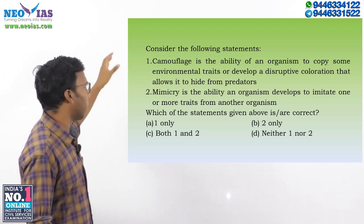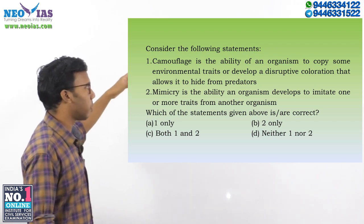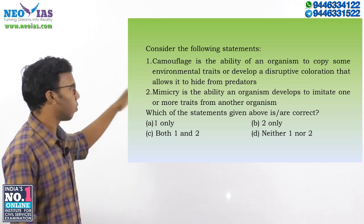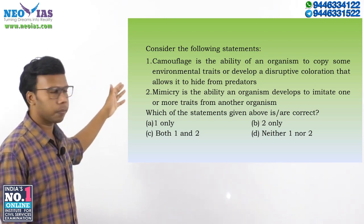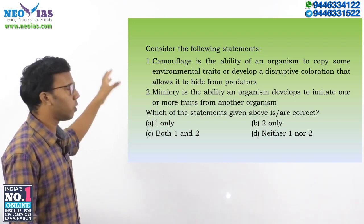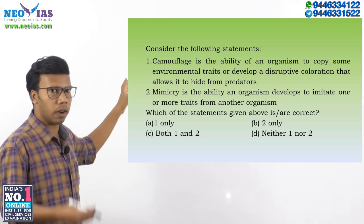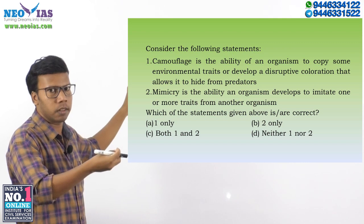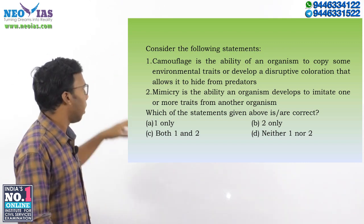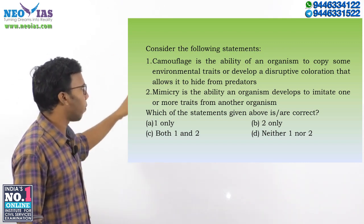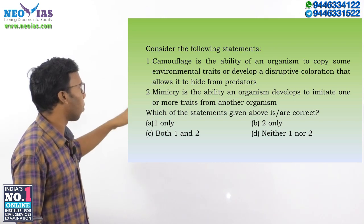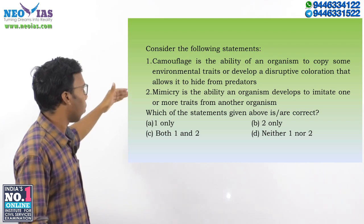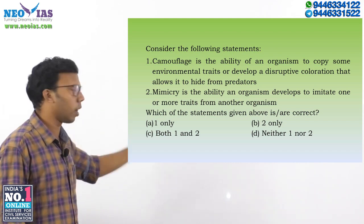Now let's move to the model question. First statement: camouflage is the ability of an organism to copy some environmental traits or develop a disruptive coloration that allows it to hide from predators — that is a correct statement. Second statement: mimicry is the ability of an organism to imitate one or more traits from another organism — that is also correct. So the answer is C: both statements one and two are correct.